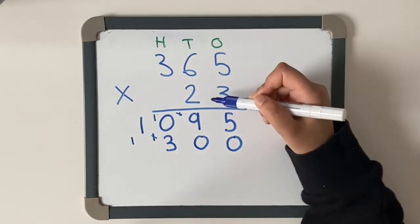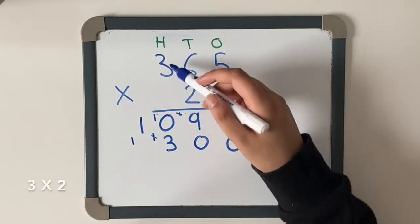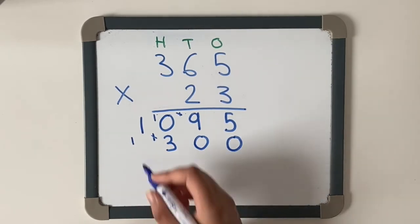So we've done five times two, we've done six times two, and now we've got three times two which is six. Add the one that we've already carried across which is seven.